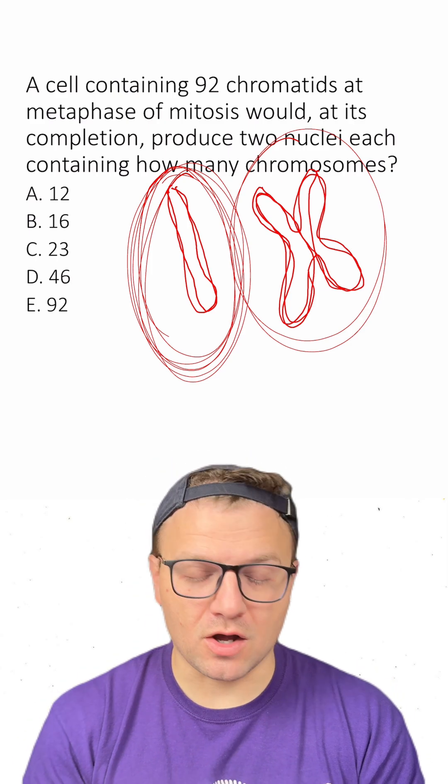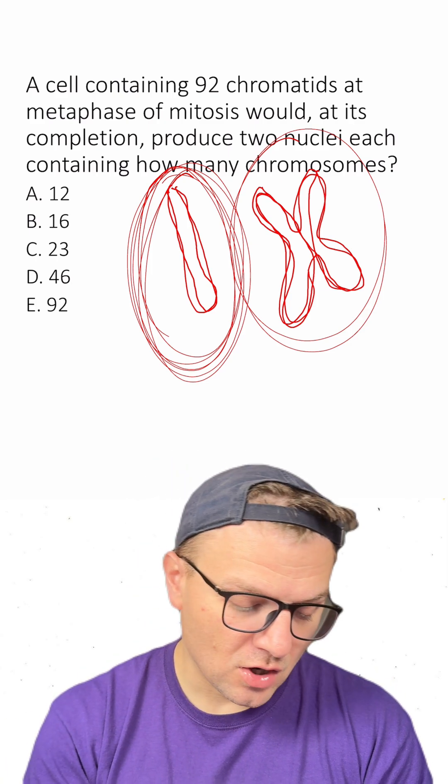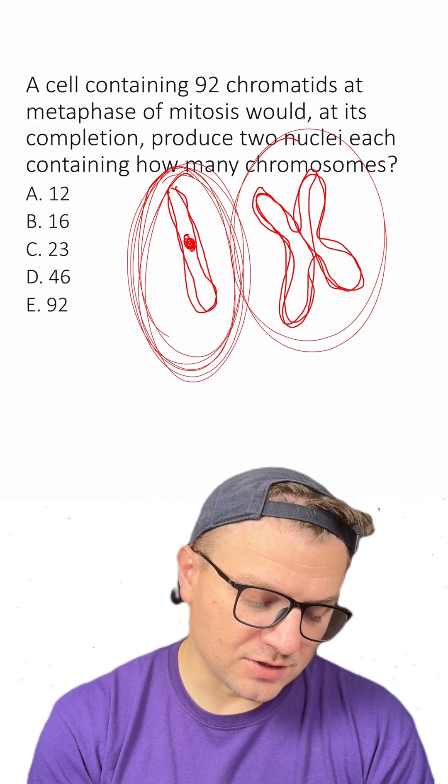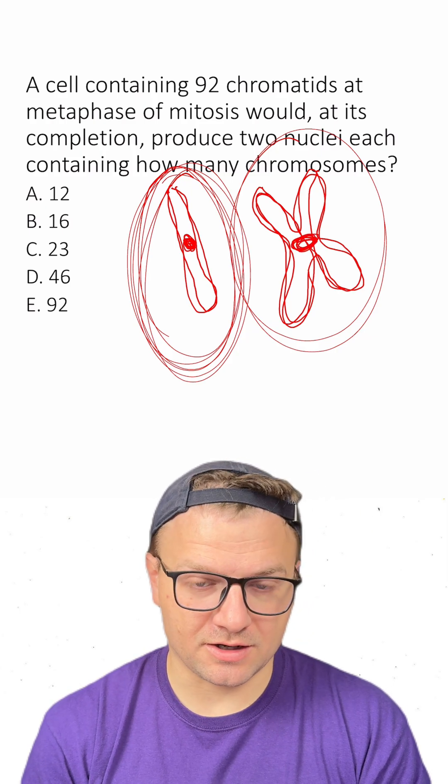To count the number of chromosomes, all you got to do is count the number of centromeres or their middles. So there's one centromere here, and there's one centromere here.